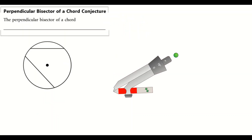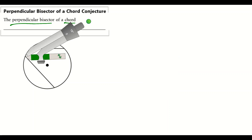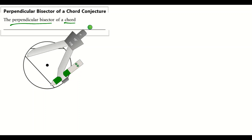Now we've arrived at the last conjecture of section 9.2 — the Perpendicular Bisector of a Chord. If you have a compass at home, you can verify this. I'll briefly go over the construction to figure out what the conjecture states. Let's construct the perpendicular bisector of one of these chords.